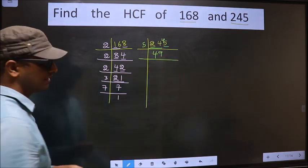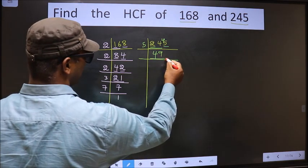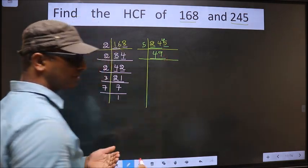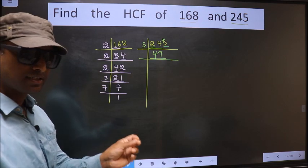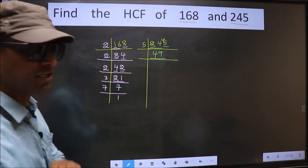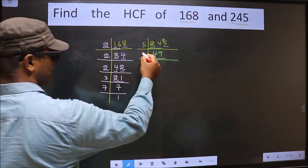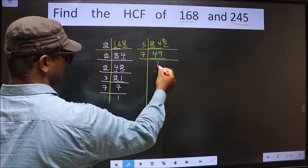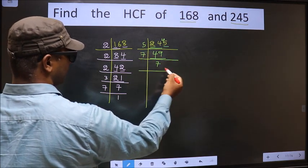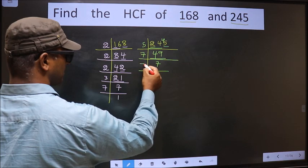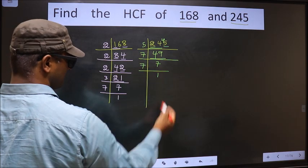Now, here we have 49. Always remember, 7 squared is 49, 7 times 7 is 49. So here we get 7, 7 times 49. Now we have 7. 7 is a prime number, so 7, 1 is 7.